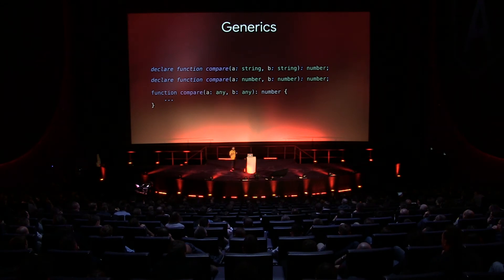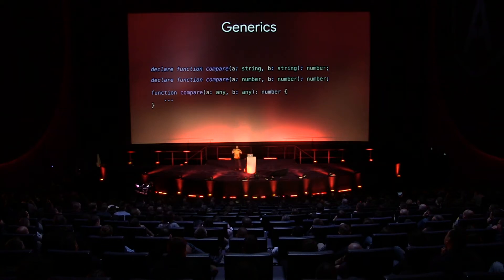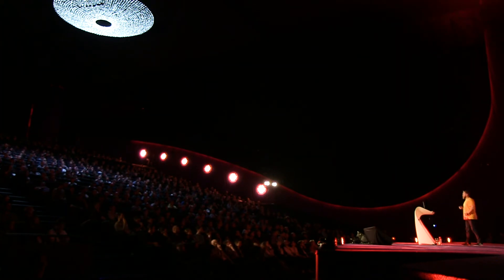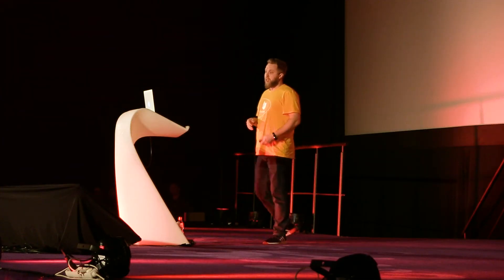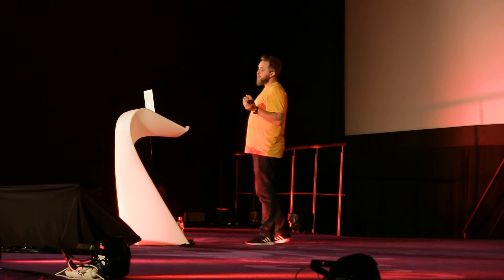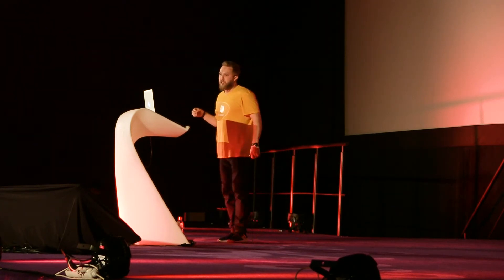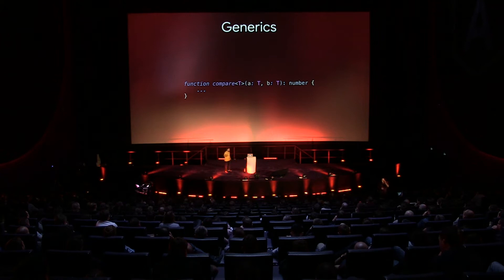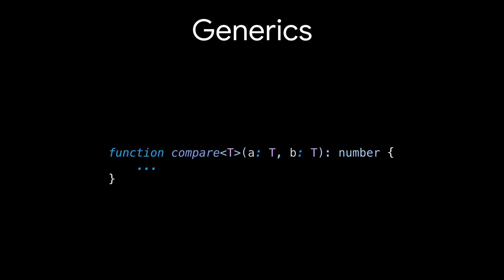The problem with function overrides is that A and B can really be any, and if you try to compare a string and a number, TypeScript will just fall back to the compare-any-and-any overload, which is probably not always what you want. To solve that problem, TypeScript has generics — it generalizes the function and extracts the type into the letter T, enforcing that A and B are of the same type, whatever that type may be.